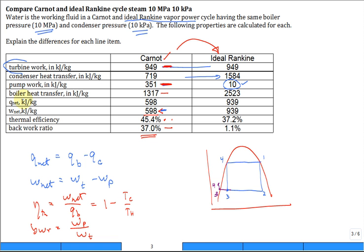How about the boiler heat transfer? It's a lot higher—from 1317 to 2523. Why is that higher? Before, you only heated from four to one for the Carnot, but now you have to heat all of this section as well.